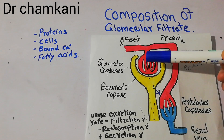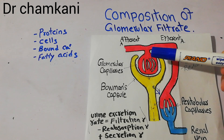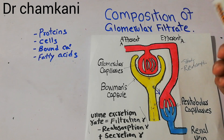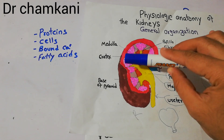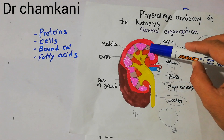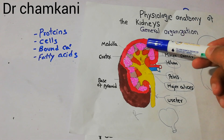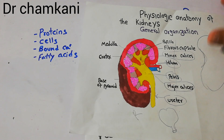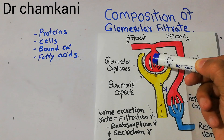Glomerular filtration is the first step in urine formation. Filtration occurs in the glomerulus, and the filtrate then enters the Bowman's capsule. Inside the kidney there are thousands of nephrons present in the renal pyramids, which are involved in the urine formation process. Urine is formed and enters these passages, then through the ureter goes into the urinary bladder. The filtration process begins at this level inside the nephron.